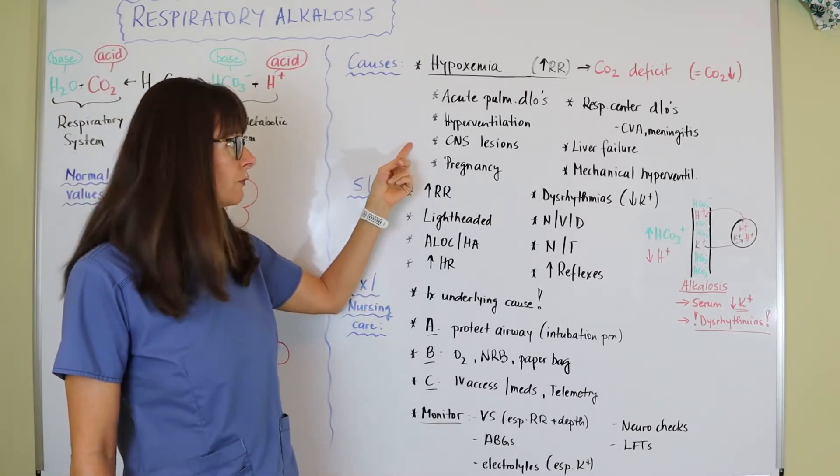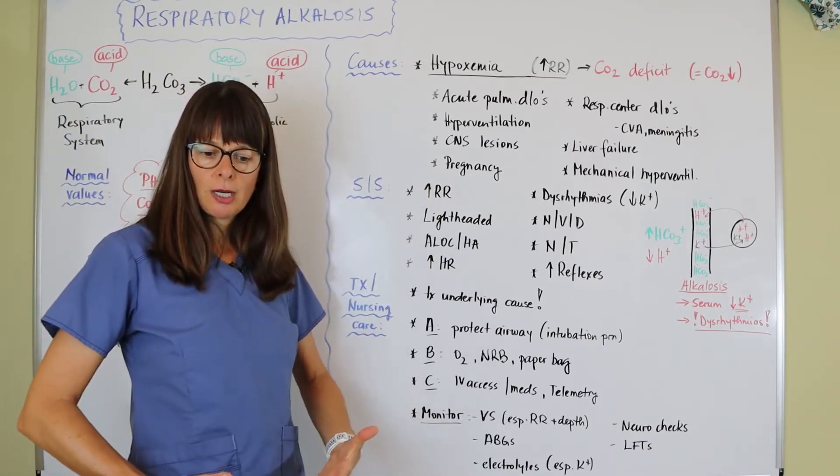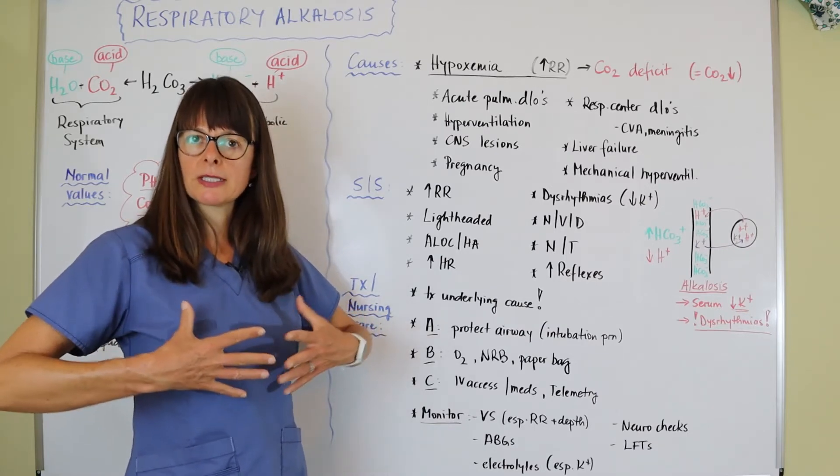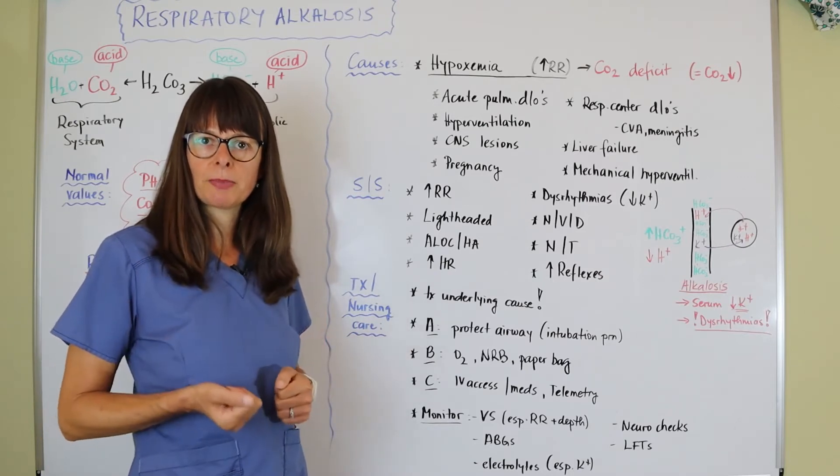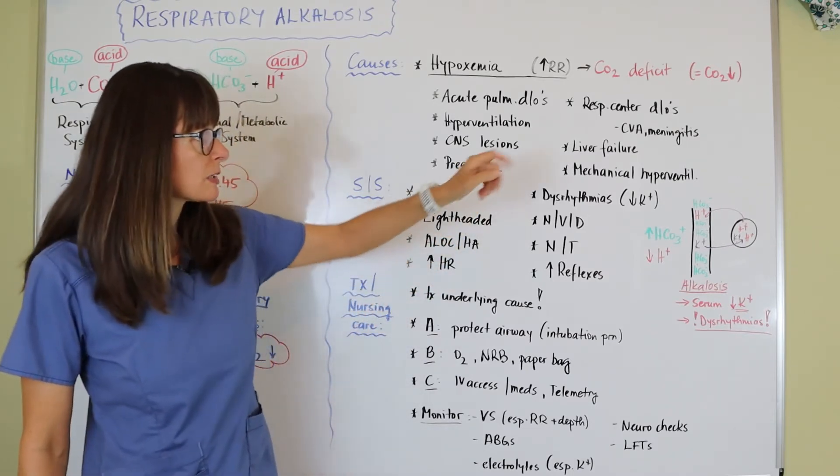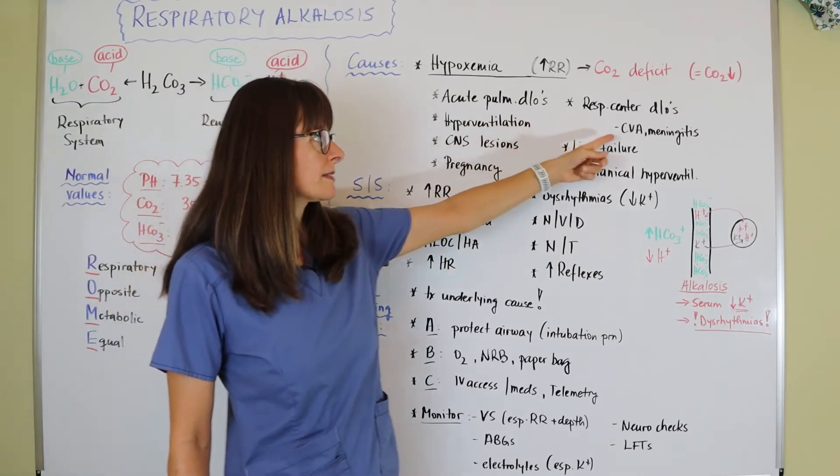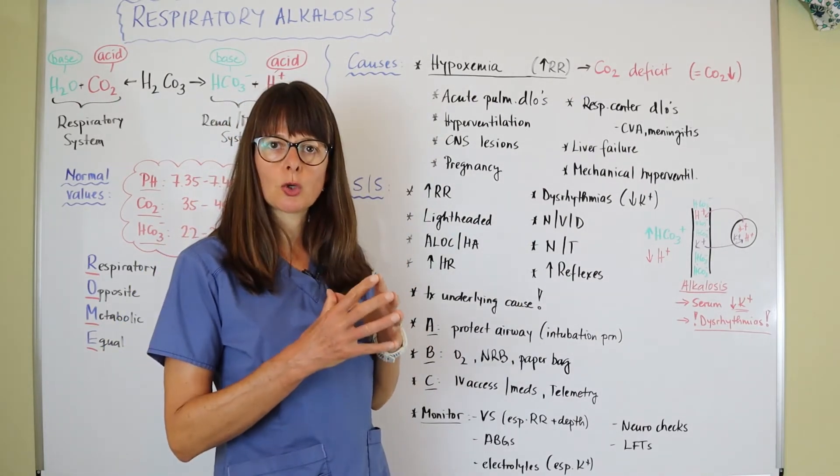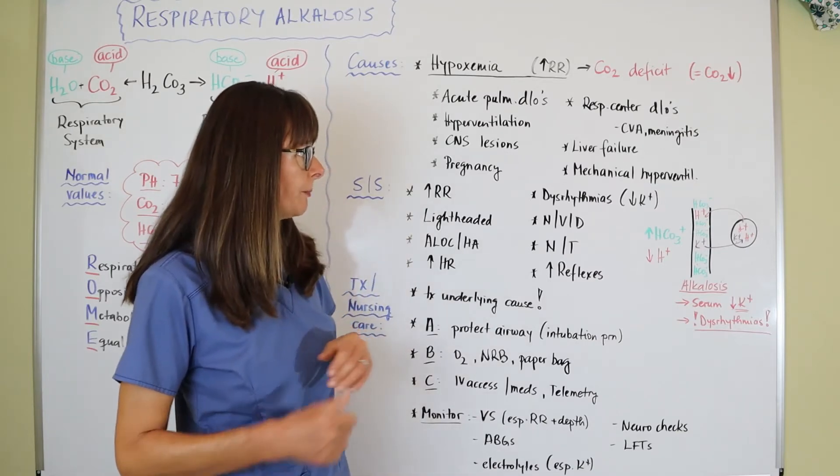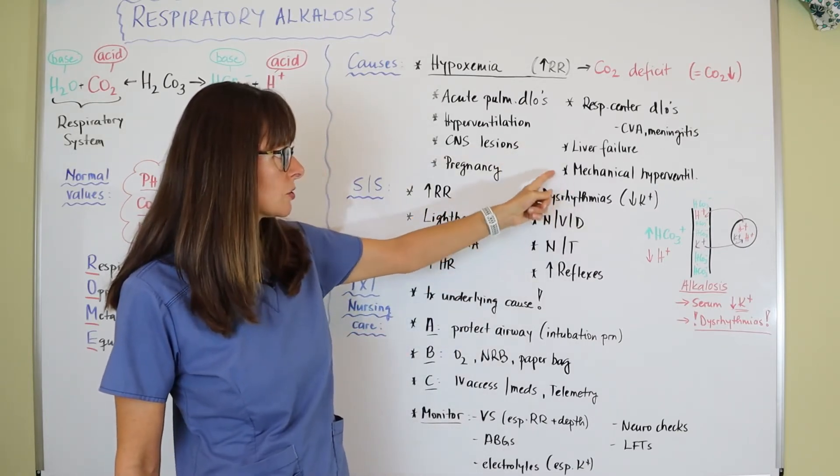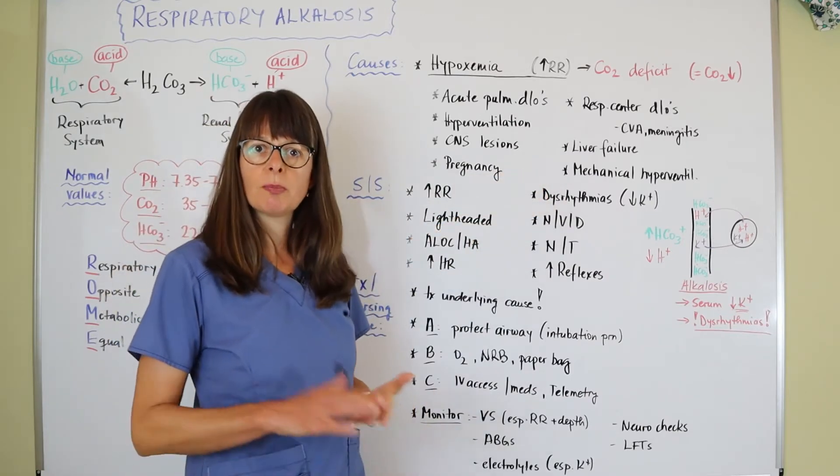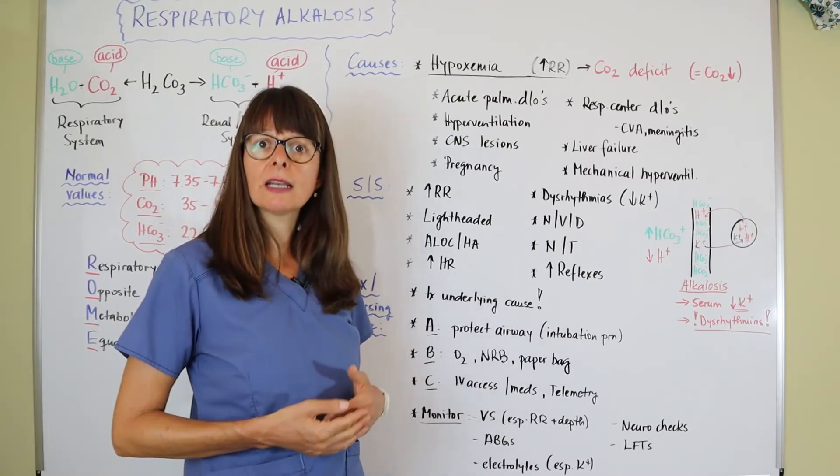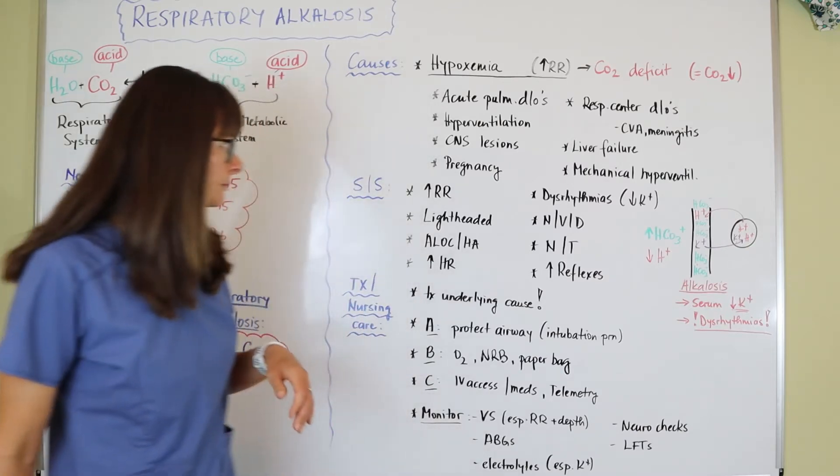Other causes include CNS lesions, like tumors in the brain; pregnancy, because the fetus as it grows puts pressure on the diaphragm and impedes the woman's ability to take a nice deep breath, which will up the respiratory rate; respiratory center disorders like stroke or meningitis that affect the respiratory centers; liver failure; and mechanical hyperventilation if a patient is on a ventilator that's not adjusted correctly.